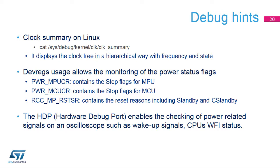Here are some tips to ease the power management debug. DebugFS is a tool dedicated to clocks in the Linux kernel. It displays the clock tree configuration on the console, which can help detect missing clocks, clocks that remain on when unused, or wrong frequencies. This is a standard tool from the Linux Community Common Clock framework. It is also important to dump registers from the RCC and PWR peripherals. In the PWR peripheral, flags related to stop mode can help verify whether stop mode was reached. In the RCC peripheral, reset flags can help detect if C-Standby or Standby mode was reached. Finally, there is a dedicated debug peripheral named HDP that can be configured through the device tree to observe internal hardware signals involved in low power entry or exit.